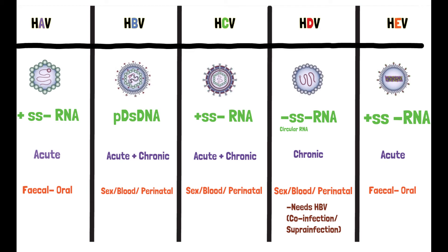The next way Hepatitis D can cause infection is through superinfection — this is when Hepatitis B virus infects a cell first and then Hepatitis D virus comes and infects it later on. That's it for the types of Hepatitis viruses. Don't forget to check out our next video on the pathophysiology of Hepatitis.